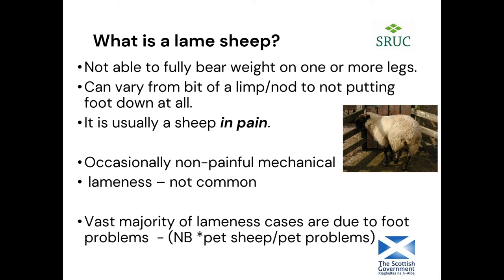The vast majority of lamenesses are due to foot problems. Pet sheep or really overly conditioned sheep can be older and more overweight, which can predispose them to arthritis — whereas commercial sheep tend to have shorter lifespans. So we do take into account different situations, but overall in sheep the vast majority of lameness cases are due to foot problems.